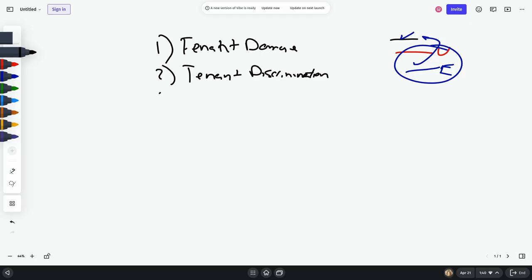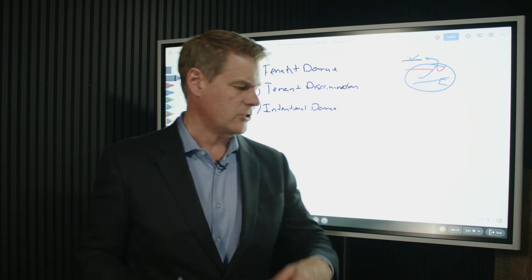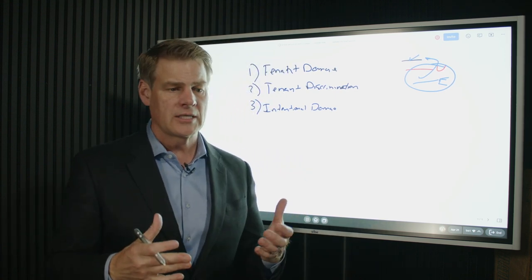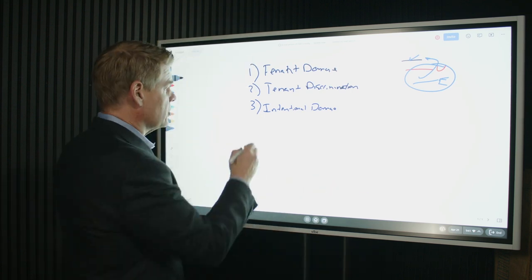Alright, so what is the third area that's going to not be covered under this type of situation? Intentional damage. Alright, so if you have, if there's a claim that you brought intentional damage to the tenant's premises or their property, that's not gonna be covered under your landlord policy. So again, we've got issues.